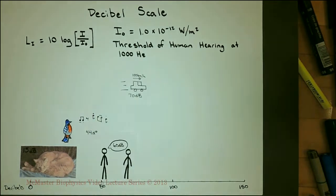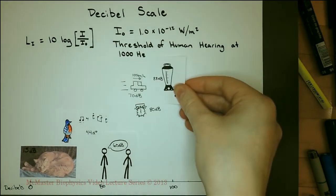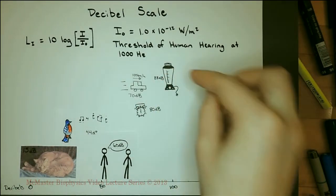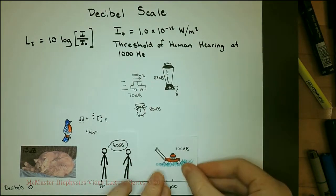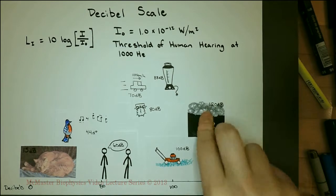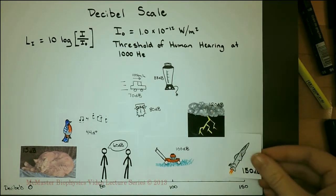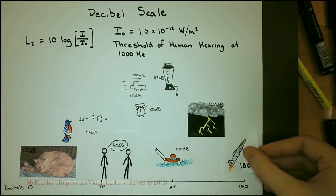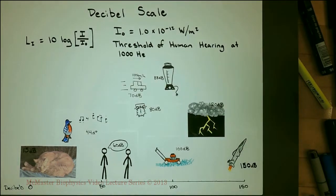An alarm clock ranks in at 80 decibels. Your average blender blends at 88 decibels. A lawnmower is around 100 decibels. A thunderclap is around 120 decibels. A jet takeoff at 25 meters is about 150 decibels and would cause permanent hearing damage.